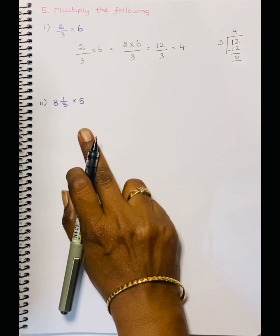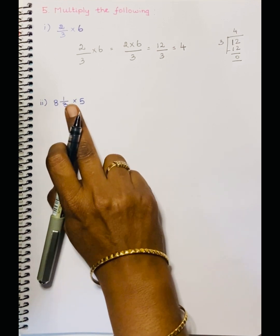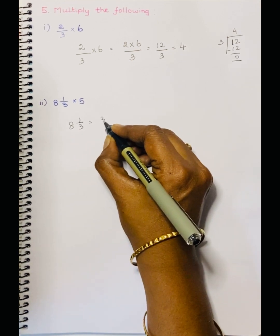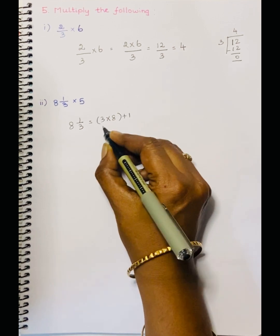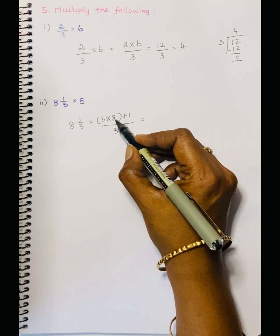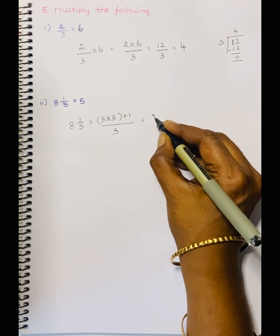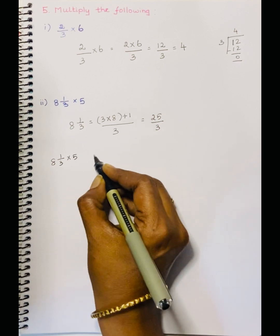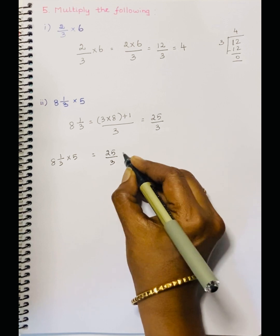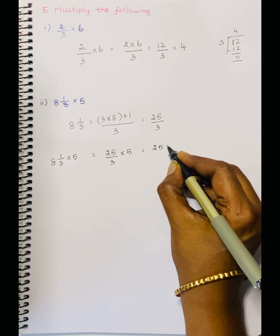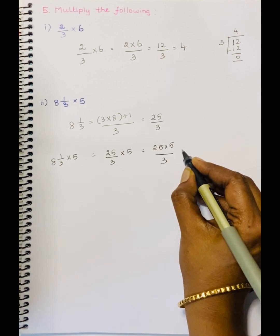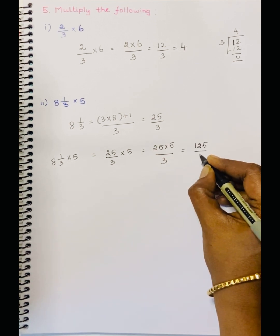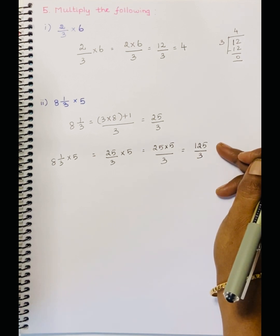Next question: 8 and 1 by 3 into 5. This is a Mixed Fraction, so convert to Improper first. 8 and 1 by 3 is equal to 3 into 8 plus 1 divided by 3. 8 threes are 24, 24 plus 1 is 25, so 25 by 3. Now 8 and 1 by 3 into 5 is equal to 25 by 3 into 5, which is 25 into 5 divided by 3.